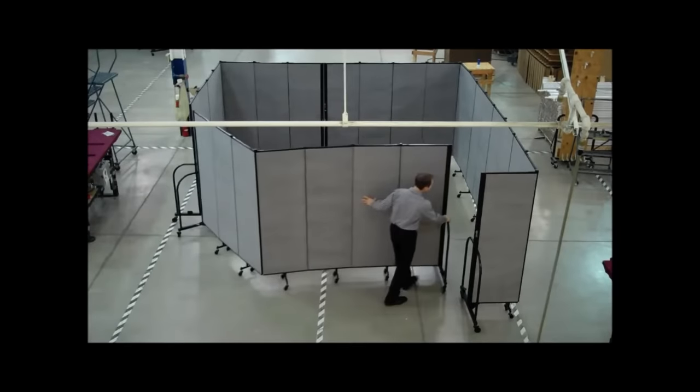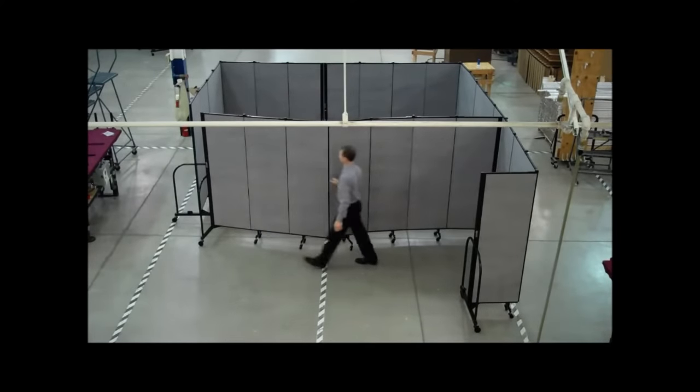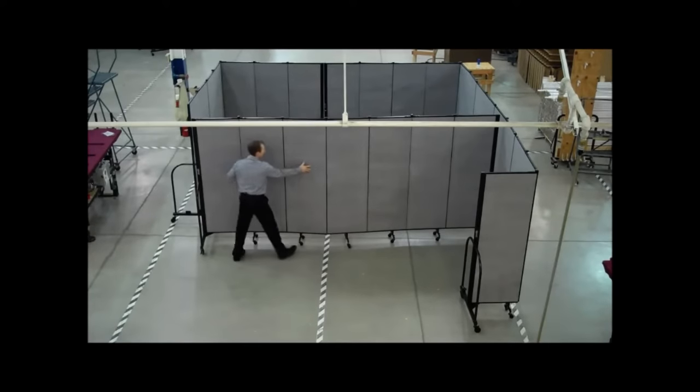A corner is simply made by bending a panel at a hinged point. Making a T connection is as simple as butting one divider up against the panel of another divider.